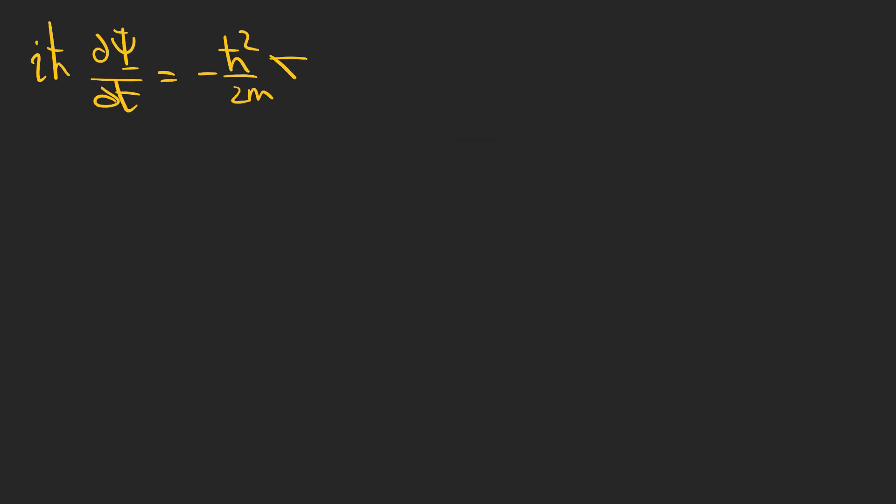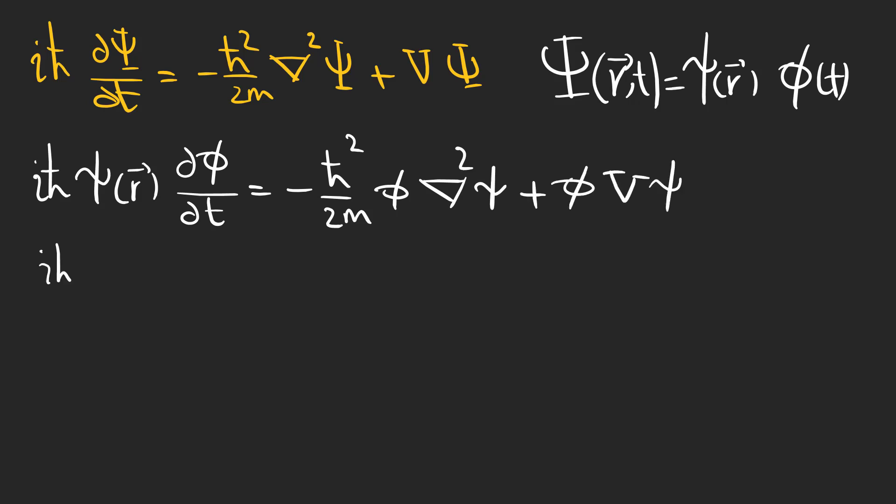Writing the Schrödinger equation in three dimensions and separating the wave function into two time-independent and time-dependent functions, we can write it as two time-dependent and time-independent equations, which are both equal to a constant E, which you know that is the energy of the system.